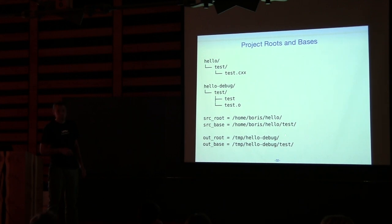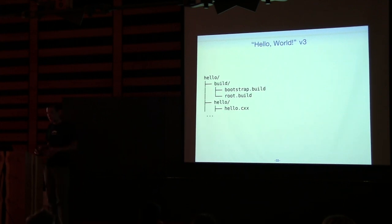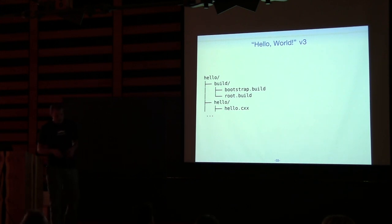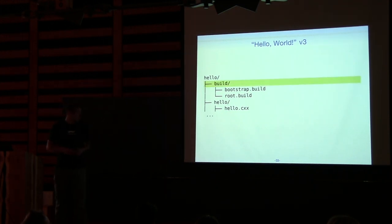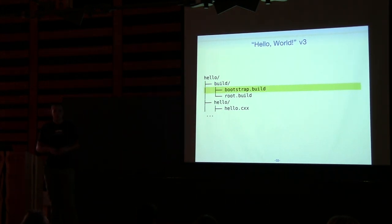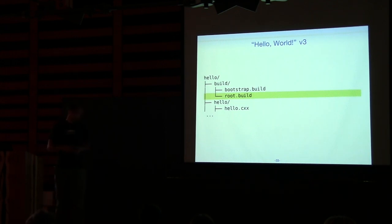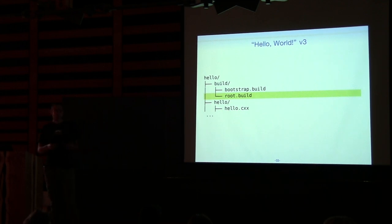How does build2 find the project root? It looks for a special directory named 'build' that contains a couple of special files. The first is 'bootstrap' — loaded first when project dependencies are loaded. The second is the root build file, which contains project-wide settings. I have two files rather than one for a reason I'll explain a bit later.